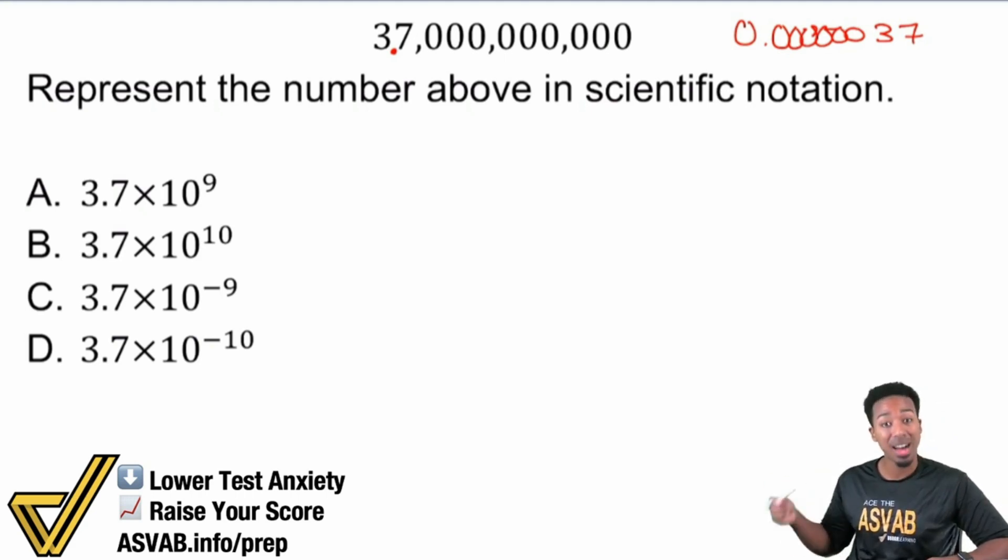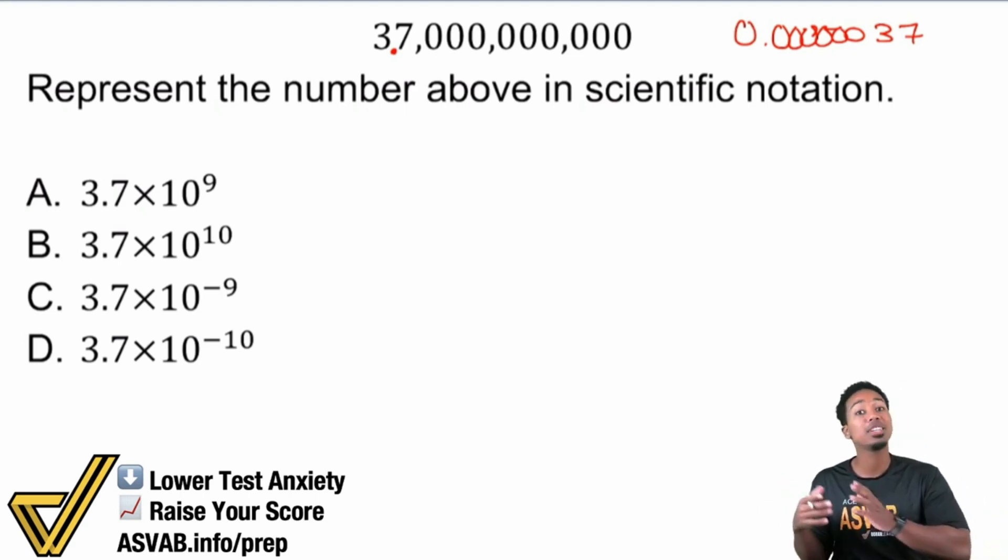So the exponent is positive if it's a huge number or bigger than one. And the exponent will be negative if it's less than one, if it's a decimal. That's all you need to know.